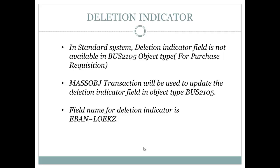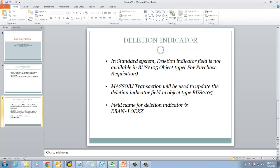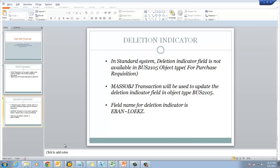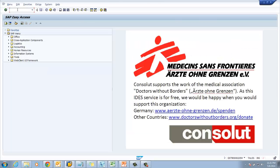We are going to use another transaction, MASSOBJ, where we are going to add the deletion indicator field in this particular object type. Then we are going to delete a specific number of purchase requisitions with the help of transaction MASS. First of all, we have to create a few purchase requisitions.